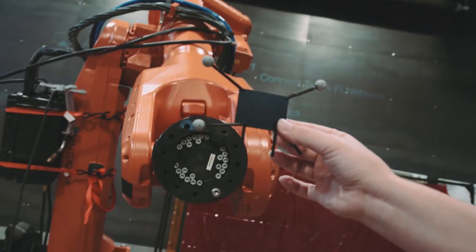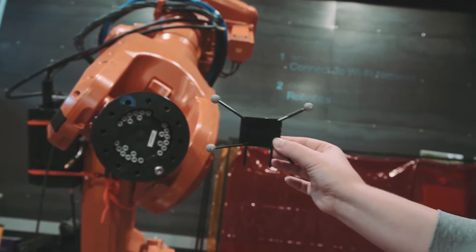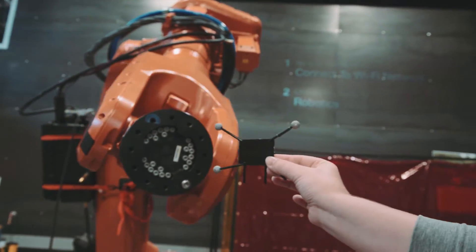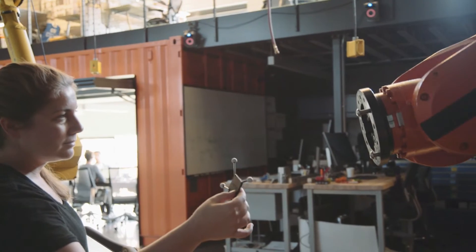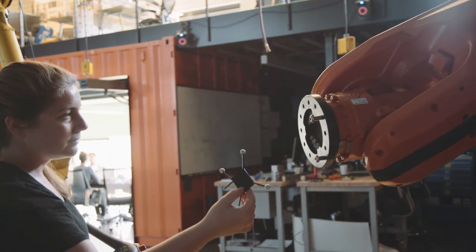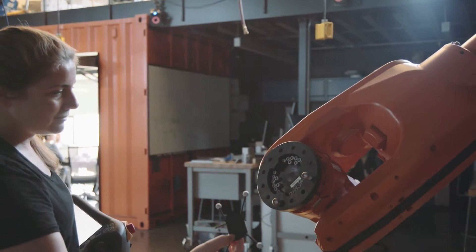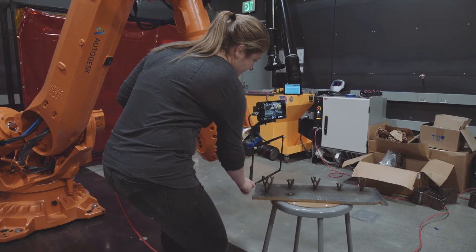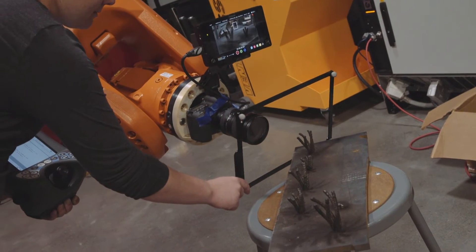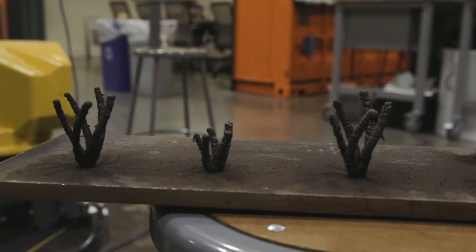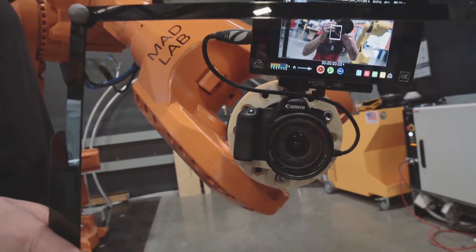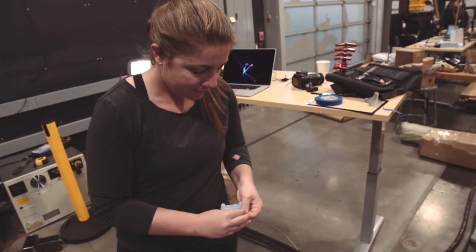If I'm wearing or if I'm holding these motion capture markers, it knows where I am in space. It knows how I'm moving in space. Now all of a sudden we can give the machine a nuanced understanding of our intention in that space. You can get someone who's never seen a robot before and have them begin to do creative things with just a couple minutes of interacting with the machine.